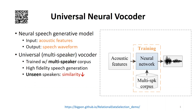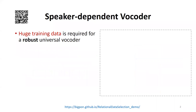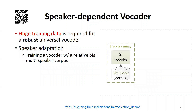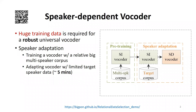However, the similarity of the generated speech usually degrades when the input speaker is unseen. Since collecting huge data of each speaker is time-consuming and expensive, a more economical way is to train a speaker-independent vocoder with a relatively large corpus and then adapt it to a speaker-dependent version using limited target speaker data.